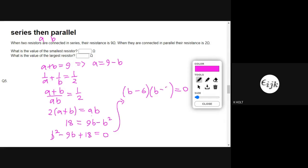Quadratic, so minus 6 and minus 3. B equals 3 or 6, and therefore A is 3 or 6 because they add to 9, so the smallest resistor is 3 and the largest is 6.